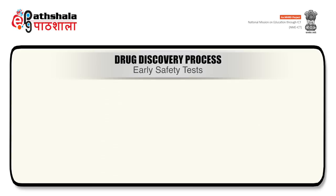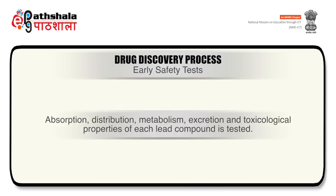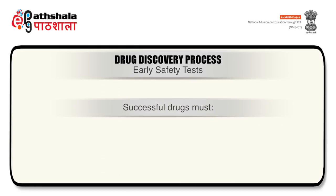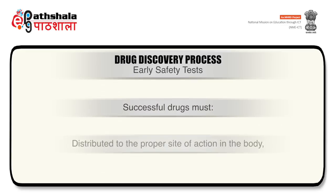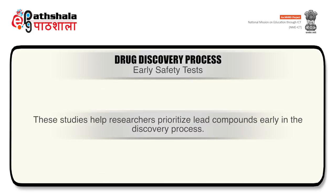After selection of the lead compound, the next step is early safety testing. Lead compounds go through a series of tests to provide an early evaluation of their safety. Absorption, distribution, metabolism, excretion and toxicological properties of each lead compound are tested. Successful drugs must absorb into the bloodstream, distribute to the proper site of action in the body, metabolize efficiently and effectively, be successfully excreted from the body, and demonstrate non-toxicity. These studies help researchers prioritize lead compounds early in the process.